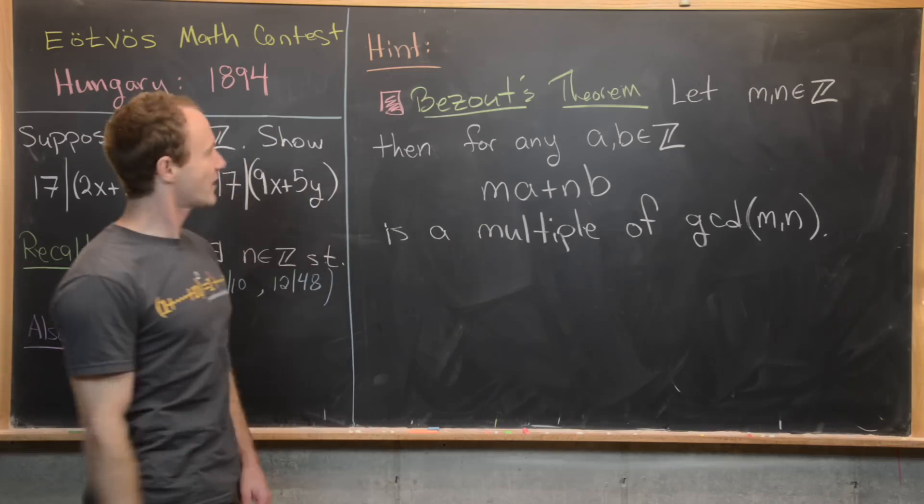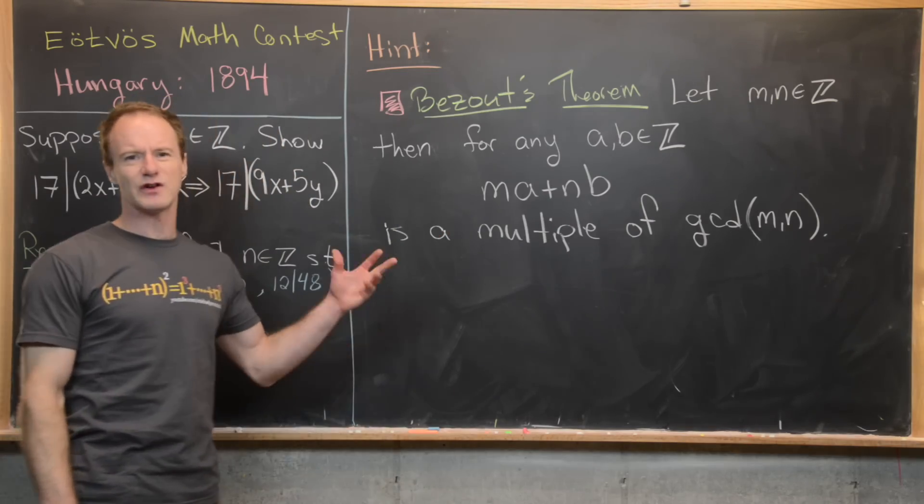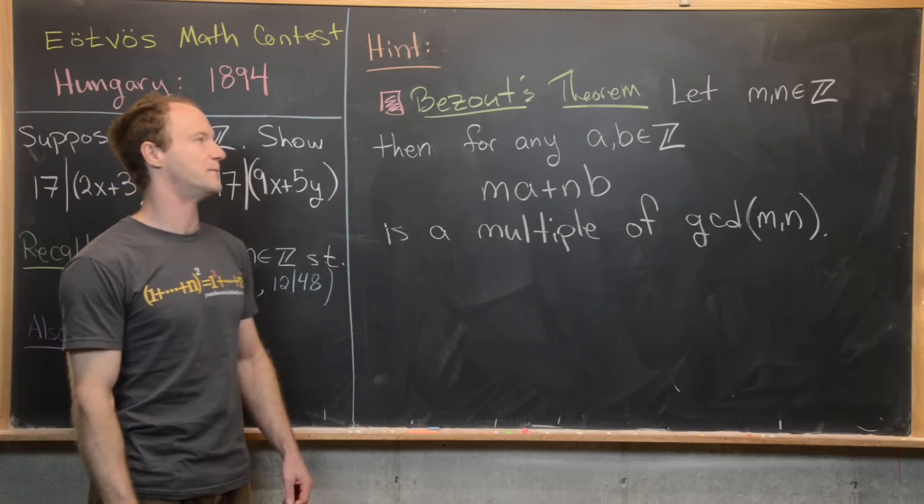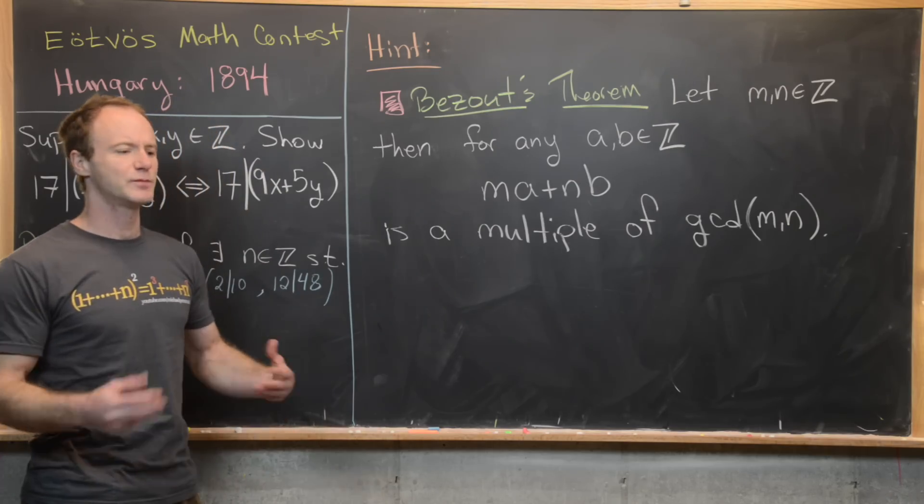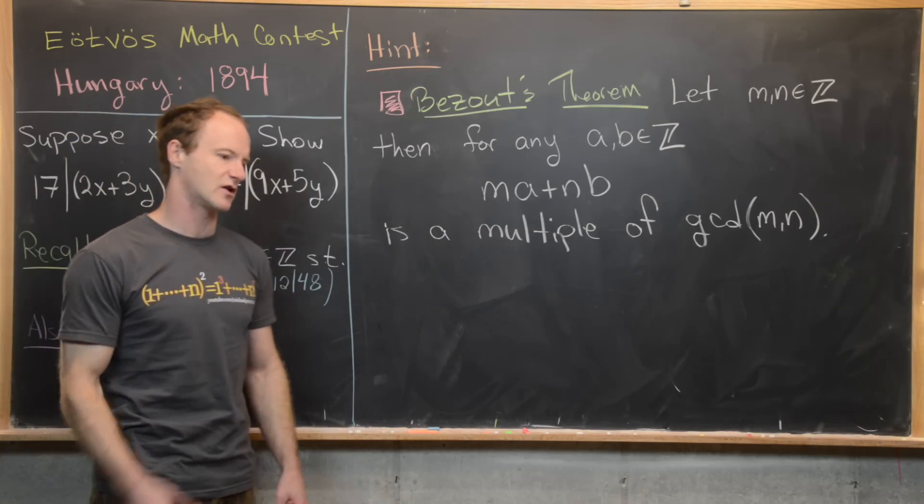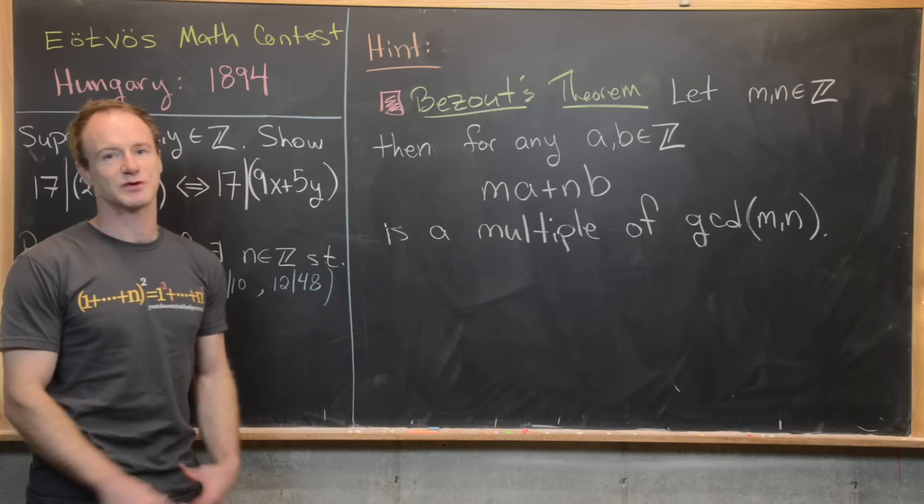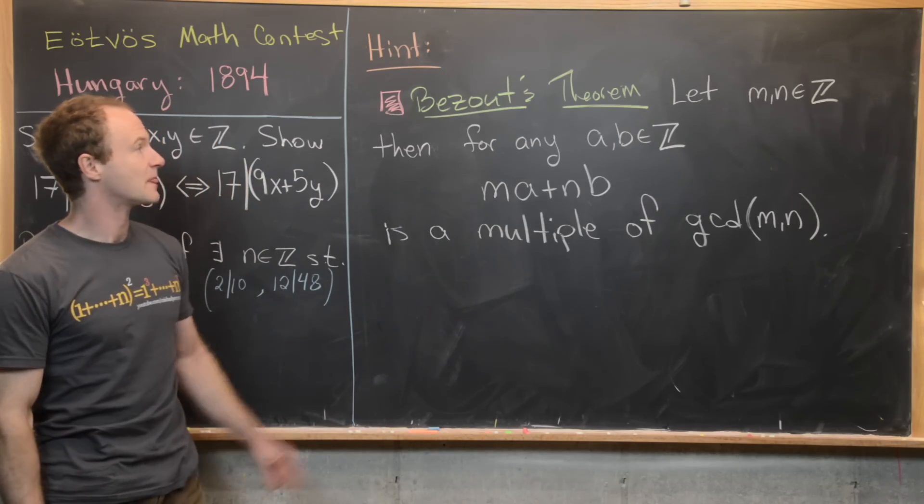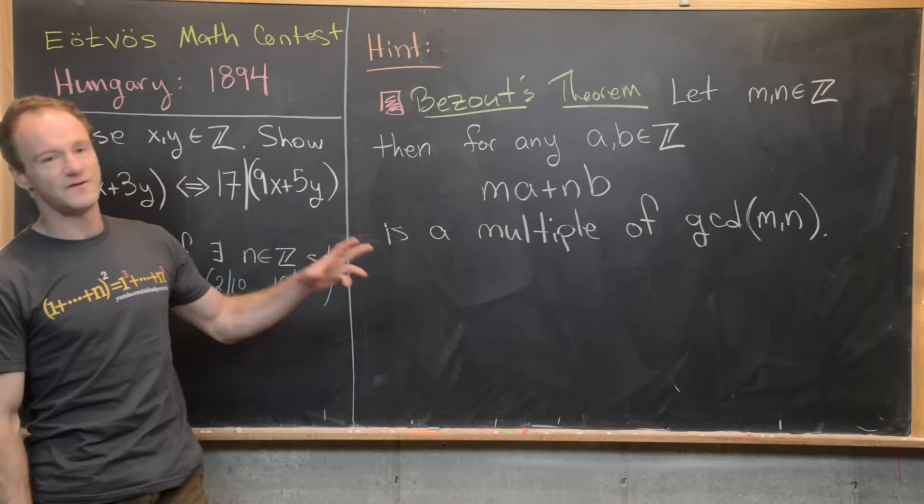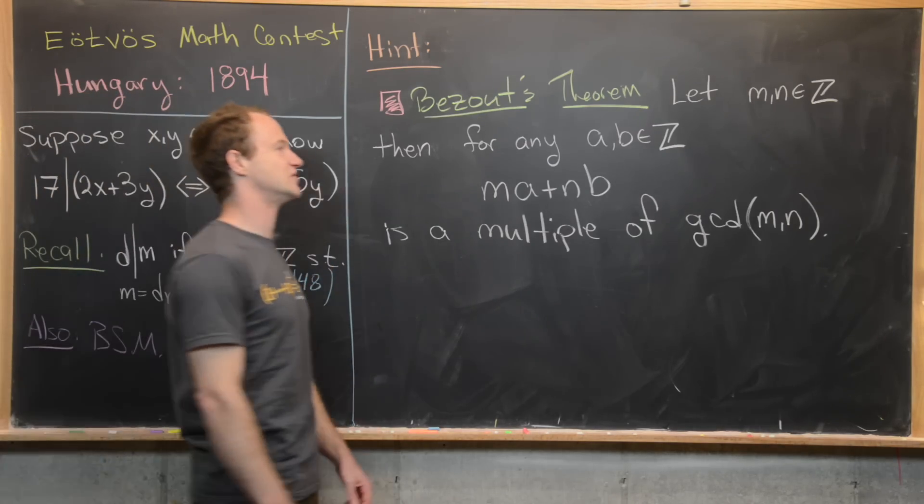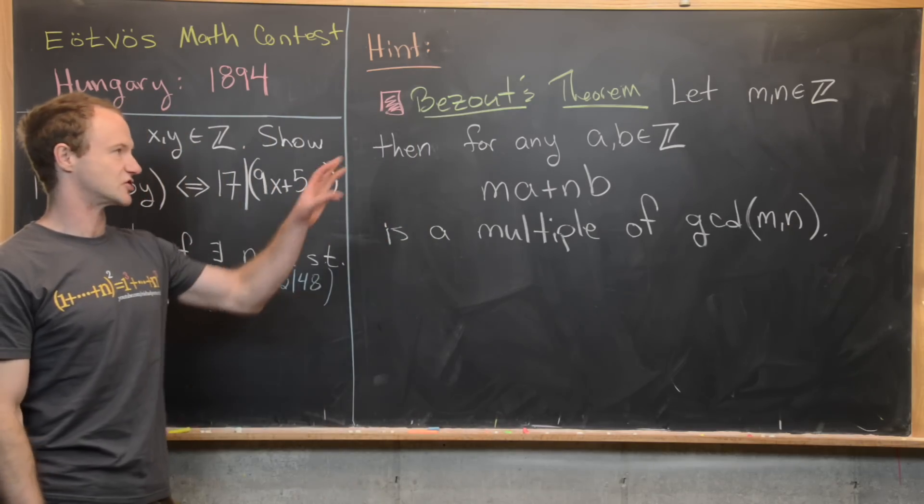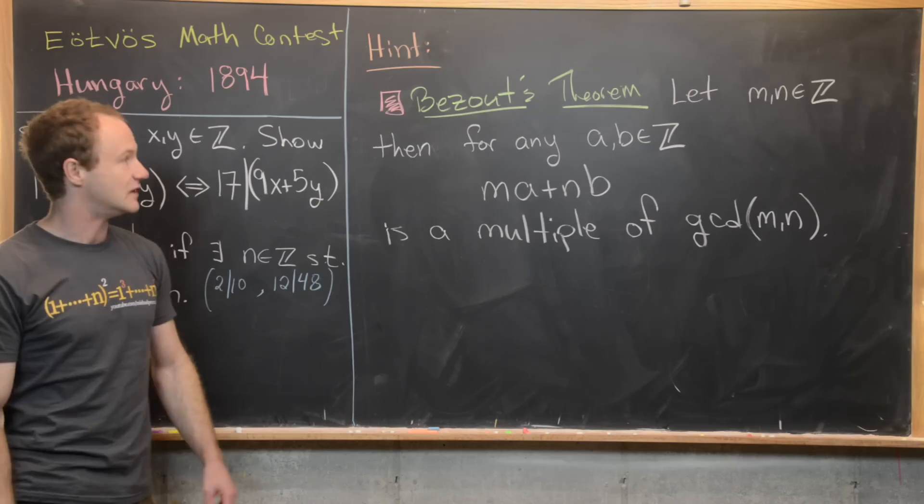Okay, so maybe before we look at a solution, I want to give you guys really the only major hint that we'll need to solve this. And that is something called Bezout's theorem. There's a super general version of Bezout's theorem that occurs in commutative algebra, algebraic geometry, but we're going to look at the kind of basic number theory version. And what we want to do is fix m and n as integers. And I should say that these really need to be non-zero integers.